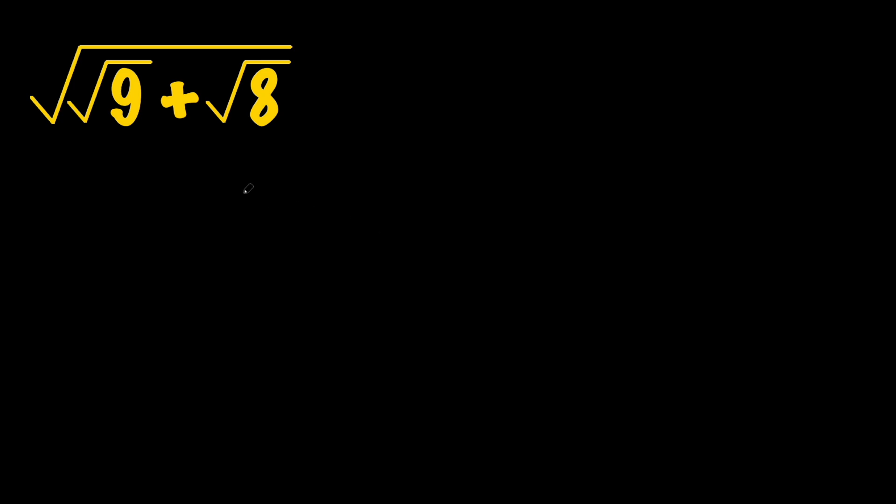So the main idea is to take the expression under the square root, which is in this case √9 + √8, and turn it into a perfect square. Because in that case, we can get rid of the square root, and that makes our expression simplified.